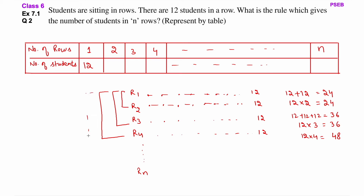Isi tarah se ye table chalta jayega. Agar aapko puchha jaye ki n number of rows mein kitne number of students baithenge, toh 12 into n karke — this is 12n. Kyunki 1 row mein 12 students baithenge, toh 12 ko multiply kar do jitni number of rows ke liye number of students find karne hai.